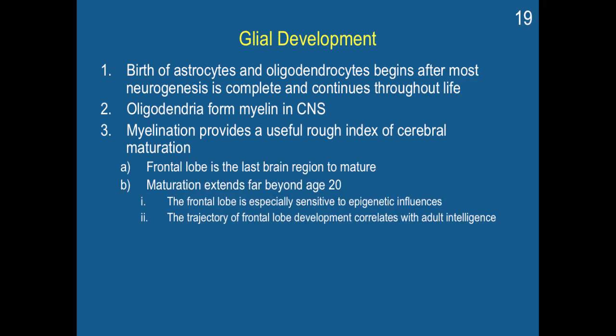The frontal lobe is the last brain region to mature, and maturation extends far beyond age 20. The frontal lobe is especially sensitive to epigenetic influences, and the trajectory of frontal lobe development correlates with adult intelligence. For most students in this class, the frontal lobe is still developing. This is one of the main reasons why certain behaviors are particularly harmful for children as opposed to adults — certain drugs are not approved for use in children because they can affect frontal lobe development, and alcohol and drug use have profoundly different effects on the developing brain than on the adult brain.